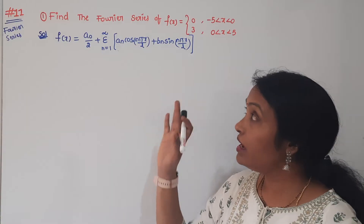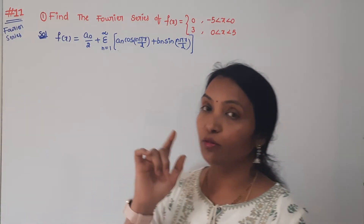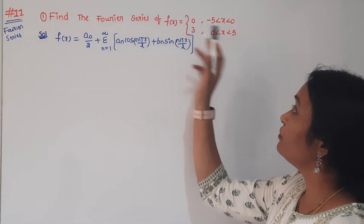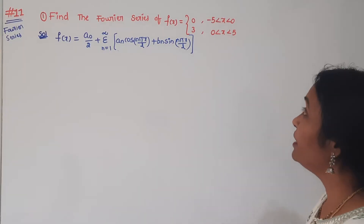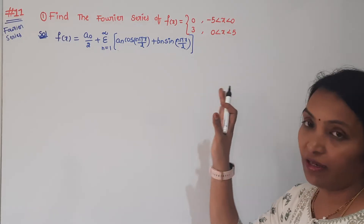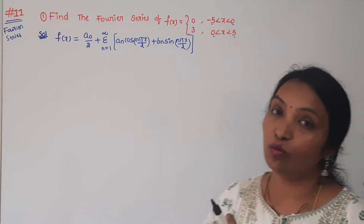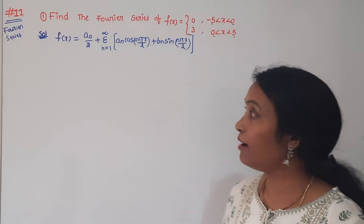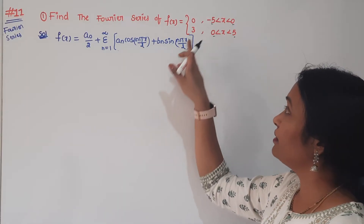This is a very important problem. First, once we try to understand the problem — find the Fourier series of the function. First, check the limits, whether they are constant or π values. Here we have a constant formula; we use the C to C plus 2L formula. This is the general Fourier series for the change of interval.